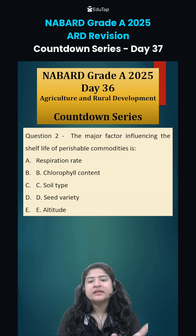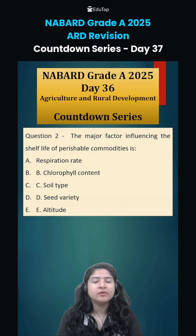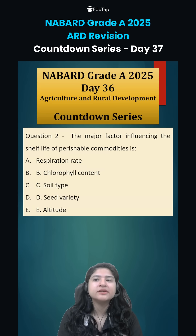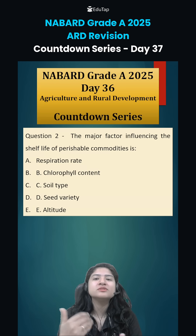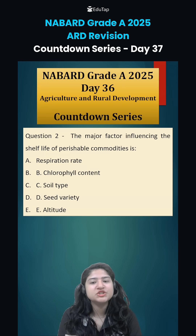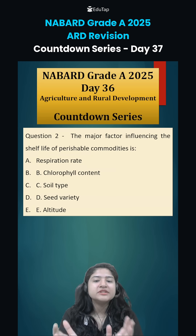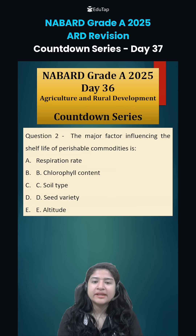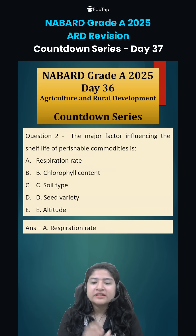The second question was: what is the major factor influencing the shelf life of a perishable commodity? Perishable means any commodity that goes bad quickly. The correct answer is option A — respiration rate.